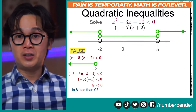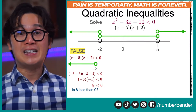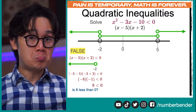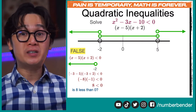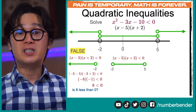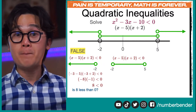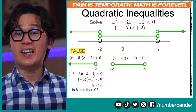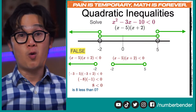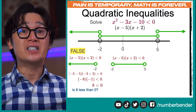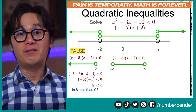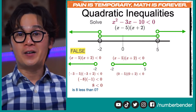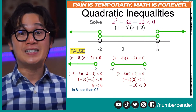So any number less than negative 2 will not satisfy the inequality. Moving to the second partition — anything between negative 2 and 5 — let's use x equals 0, the easiest choice. We get 0 minus 5 times 0 plus 2, which is negative 5 times 2, equal to negative 10. Is negative 10 less than 0?